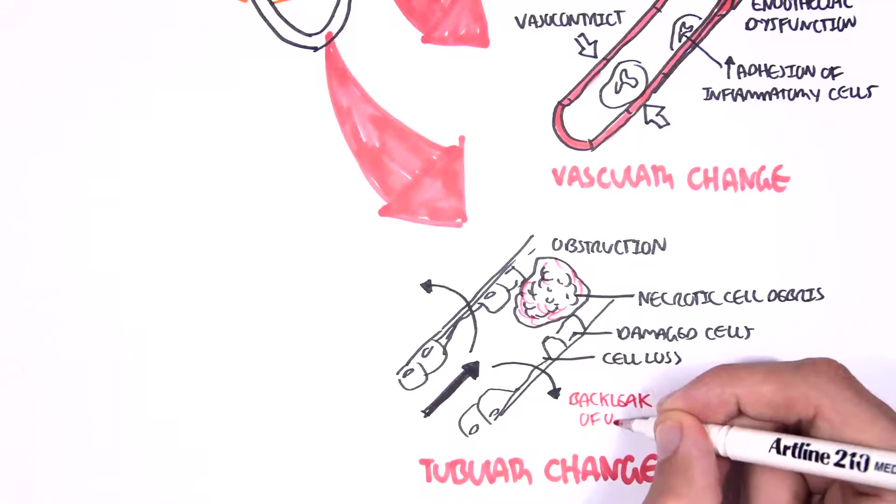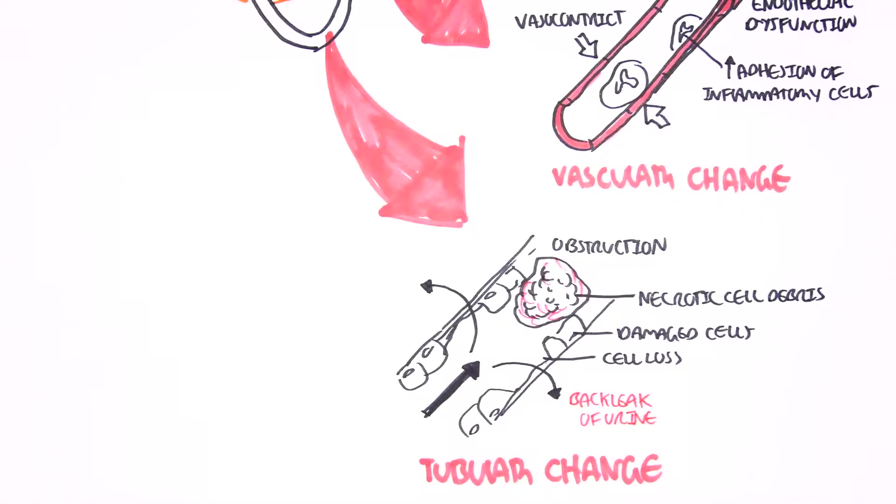This can lead to other complications. So these are the two main changes that cause a decrease in GFR in intra-renal failure.